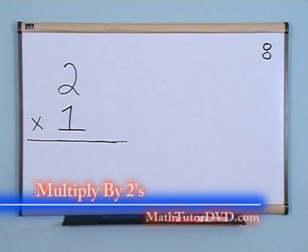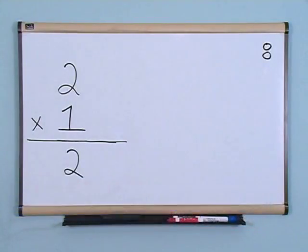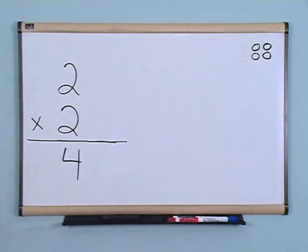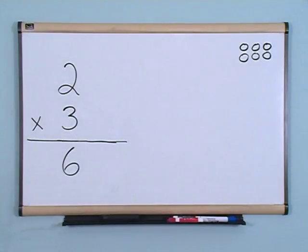2 times 1 is 2. 2 times 2 is 4. 2 times 3 is 6.